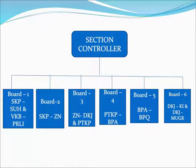The Secunderabad Division control organization is divided into six boards. Board 1: Sankarpali to Shulali and Vikarabhar to Parli. Board 2: Sankarpali to Jengam. Board 3: Sankarpali to Dornakal and Jengam to Potkapali. Board 4: Potkapali to Belampali. Board 5: Belampali to Balarsha. Board 6: Dornakal to Kondapali and Dornakal to Managur.